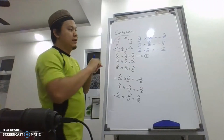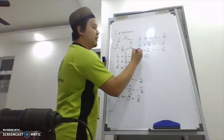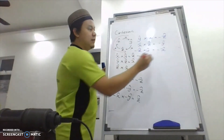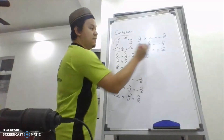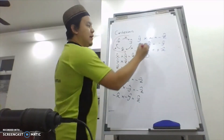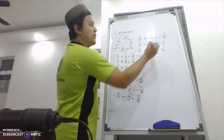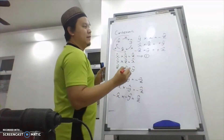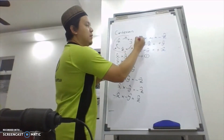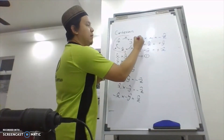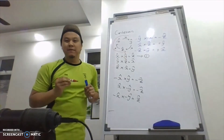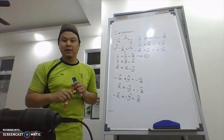And z cross y gives negative x. If I put a negative on one vector, it becomes positive. If I put a negative on both, it is still negative.